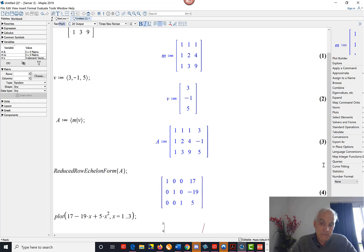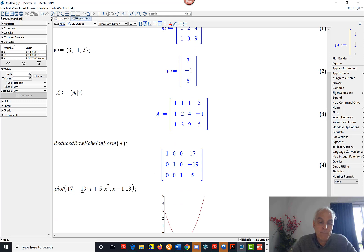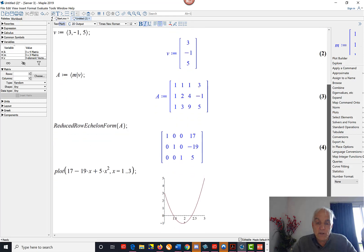And we can sort of verify that this is reasonable by plotting. So I'm plotting 17 minus 19x plus 5x squared, and I have to give it a range - I can give it a range, say x equals 1 to 3 with two dots there - and then it will plot the function. There it is right there. At the value 1 it has value 3, when x is 2 it's down at minus 1, and when x is 3 it's up at 5. So this curve does look like it's going through the three points that we've talked about.